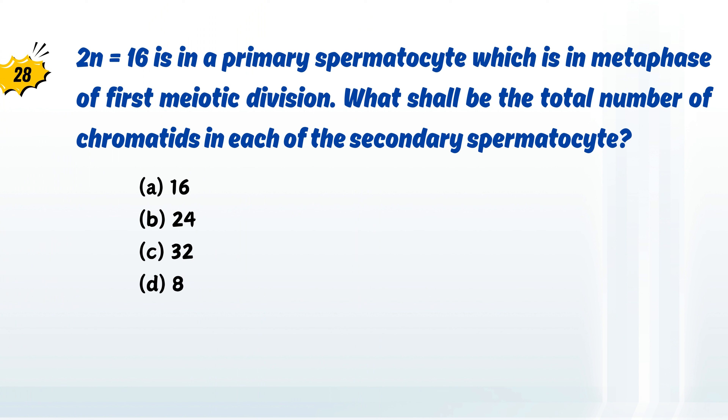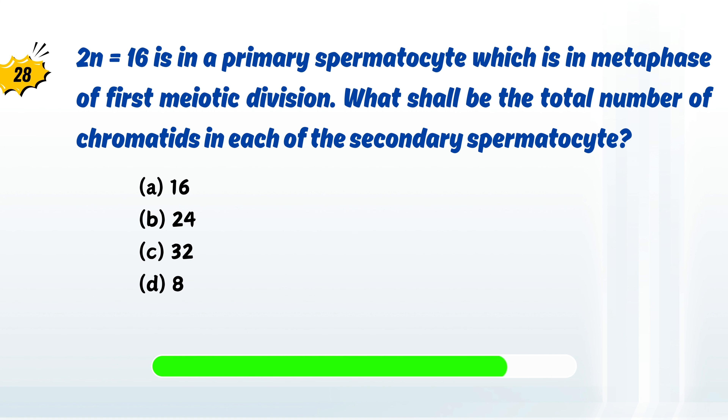2n equals 16 is in a primary spermatocyte which is in metaphase of first meiotic division.